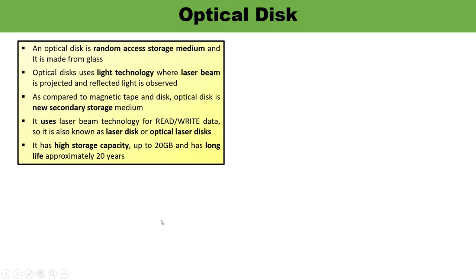This video is basically about optical disk. Optical disk is a random access storage medium made from glass. Information is written to or read from the optical disk using a laser beam. It has a very high storage capacity — approximately 20 GB of data — and a long life of approximately 20 years. It is relatively inexpensive, and only one surface is used to store data. Since it uses a laser beam, it is also known as a laser disk or optical laser disk, and it is the latest among the various types of auxiliary storage.